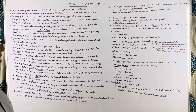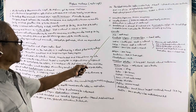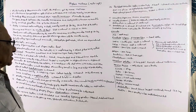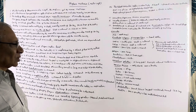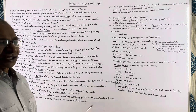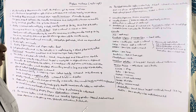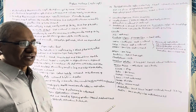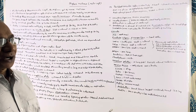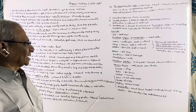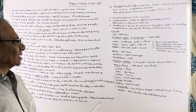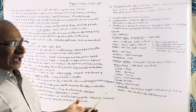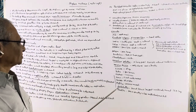Coming to the examples: Pila globosa is commonly known as the apple snail. Pintada vulgaris and Pintada margaritifera are known as pearl oysters, which produce pearls. Pearls are produced by the mantle membrane — when a foreign substance like a sand particle enters between the body and the mantle membrane, the animal secretes a pearly substance around it and ultimately a pearl is produced. The pearl is made of calcium carbonate, just like the shell of a mollusk.